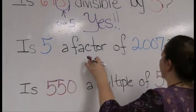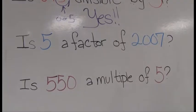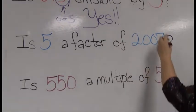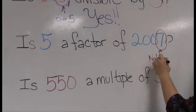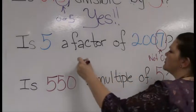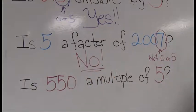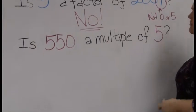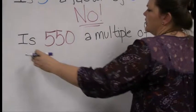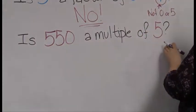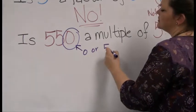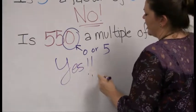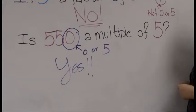They can change the words: is 5 a factor of 2,007? If it's a factor it divides it perfectly — same question. The final digit is 7, which is not a zero or a five, so the answer is no. Finally, is 550 a multiple of 5? We look at the final digit and see a zero — that's a zero or a five — so the answer is yes. Pretty simple rule.